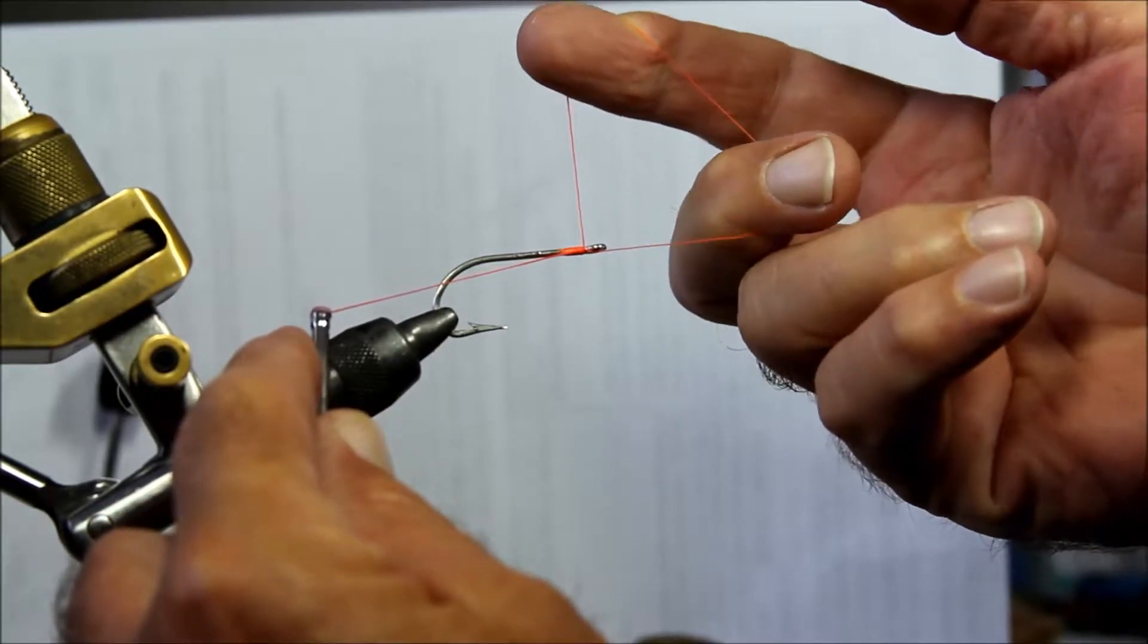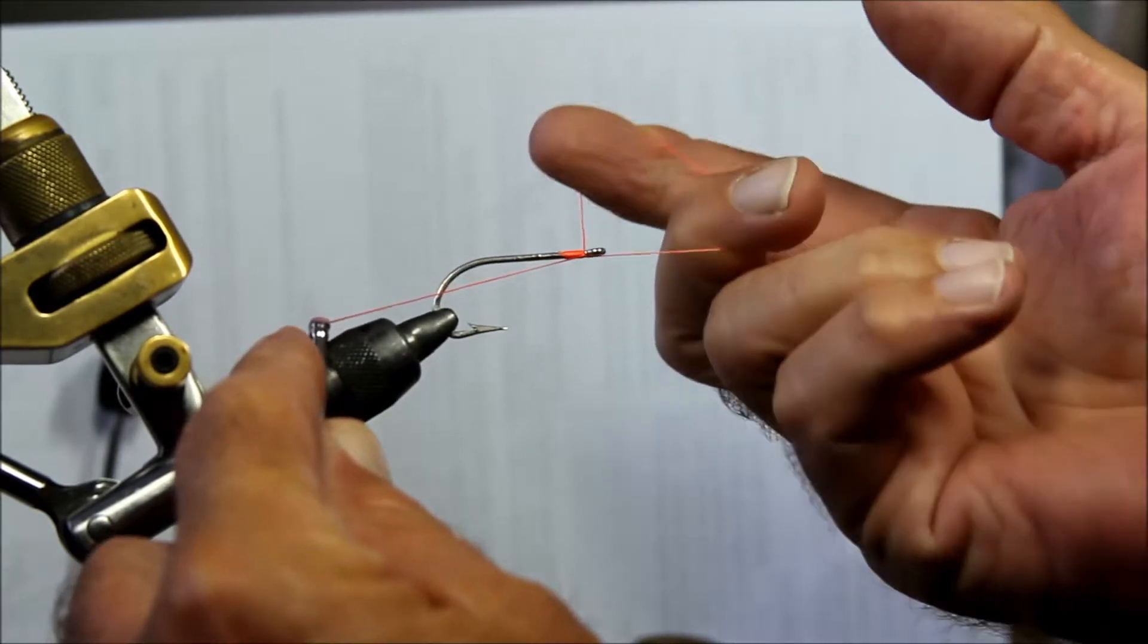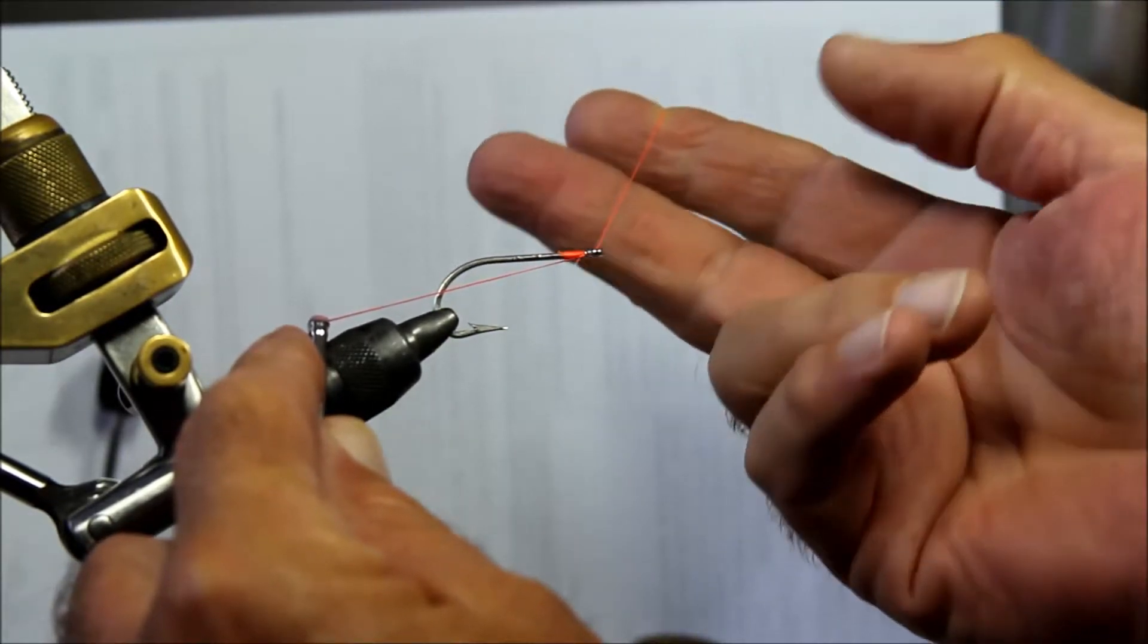The index finger comes up over the thread and over the shank of the hook. You then twist.